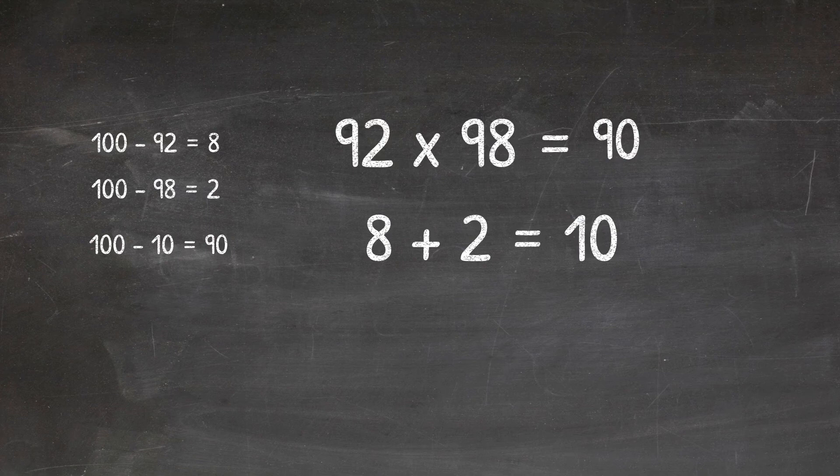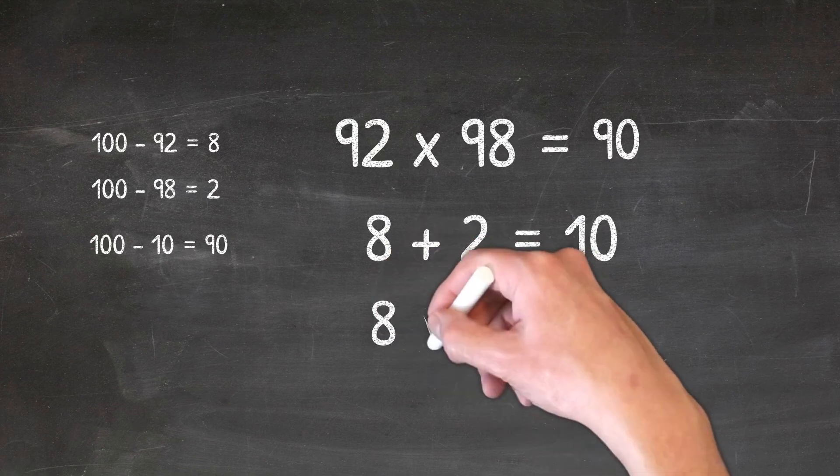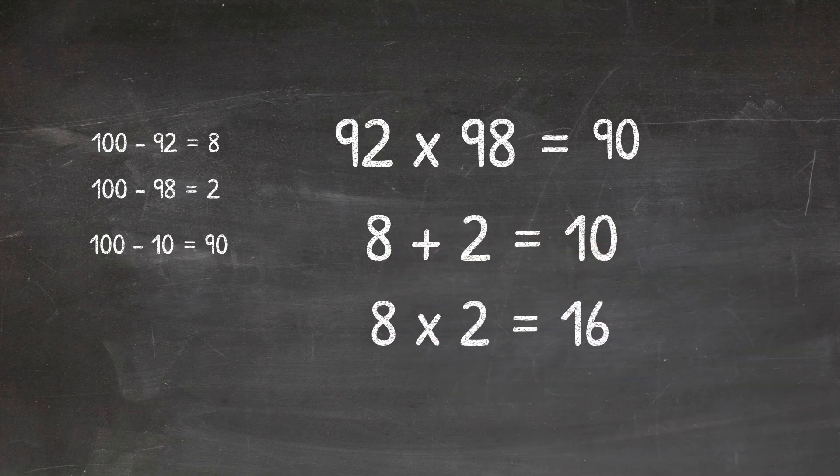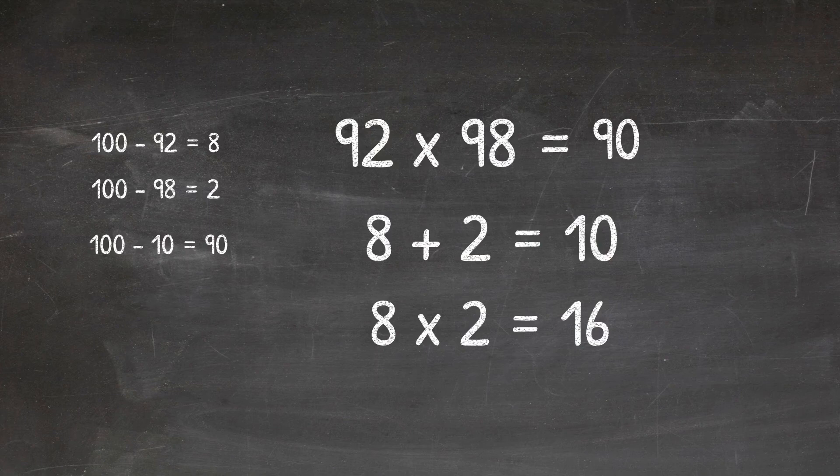So those two numbers we started with, 8 and 2, we're going to use them again. This time, we're going to times them together. So 8 times 2, as we know, is 16.